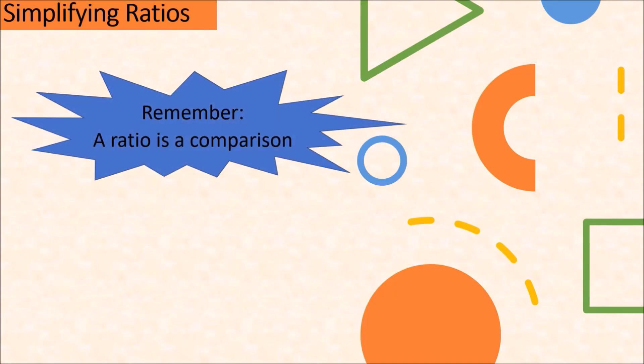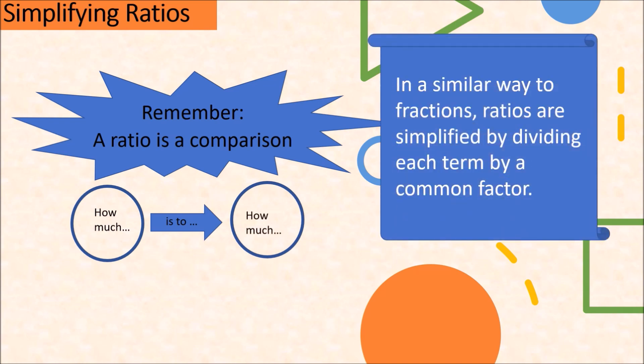Now remember, a ratio is a comparison. You want to know how much you have of something as compared to how much you have of the other thing. In a similar way as fractions, ratios are simplified by dividing each term by a common factor.